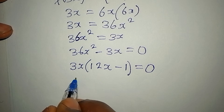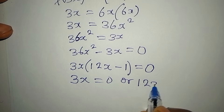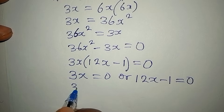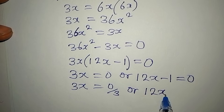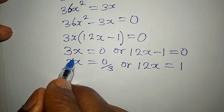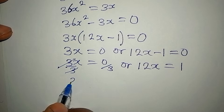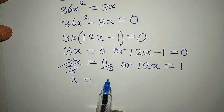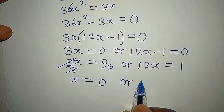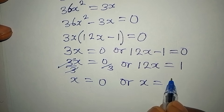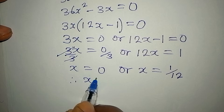Applying the zero product rule, it is either 3x equals 0 or 12x minus 1 equals 0. From 3x equals 0, dividing both sides by 3 gives x equals 0. From 12x equals 1, dividing both sides by 12 gives x equals 1 over 12. Therefore x equals 0 or x equals 1/12.